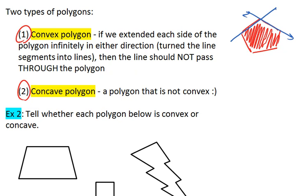We turn the line segments into lines, extending them. We'll make sure we do that for every line segment. Notice how none of the blue lines pass through the shaded red space. This means that this is a convex polygon.